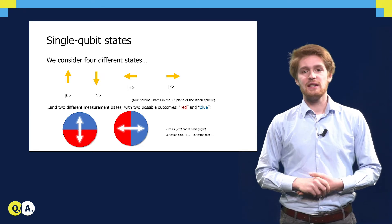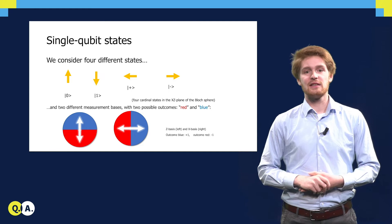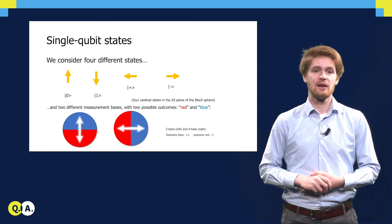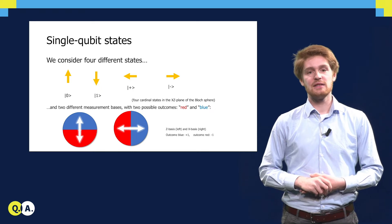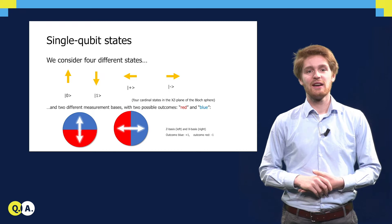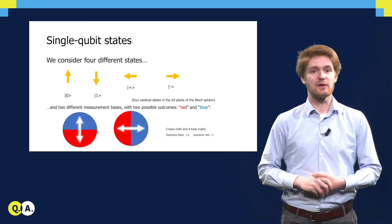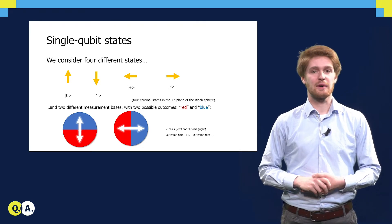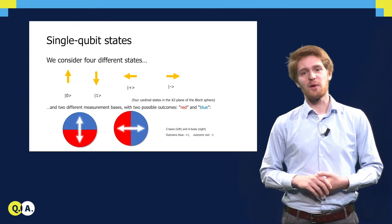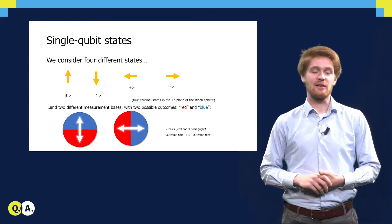For those of you who have seen these states before, you probably recognize these as the four cardinal states in the XZ plane of the Bloch sphere. The two measurement bases are the Z bases on the left and the X bases on the right. Furthermore, the outcomes blue and red correspond to the outcomes plus one and minus one respectively. If these names do not sound familiar to you, then don't worry, we will not need them in the remainder of this video.